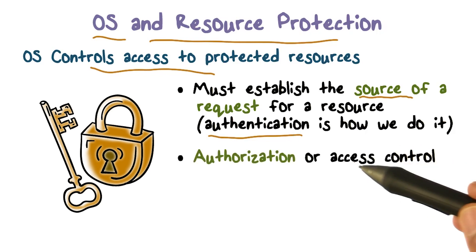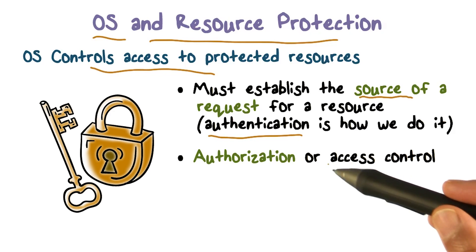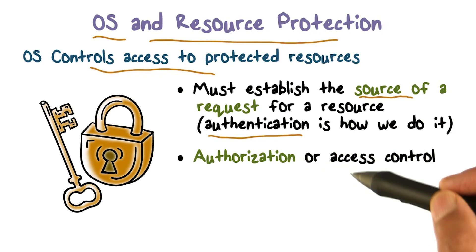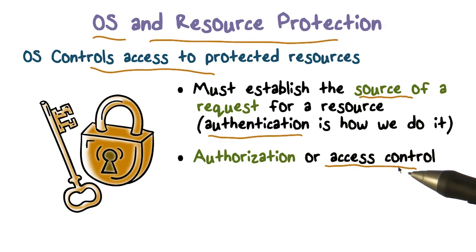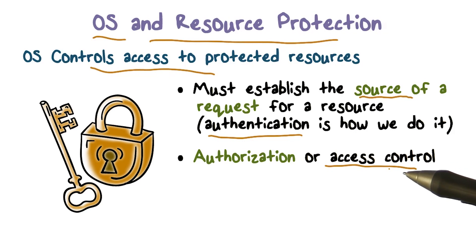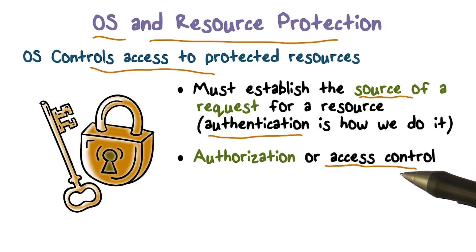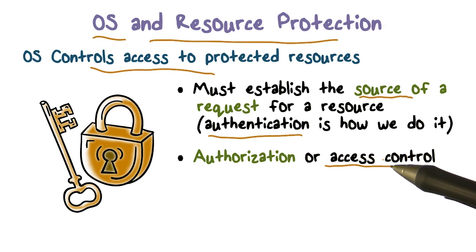Once we know who's making the request, then we have this thing called authorization or access control. This is really checking — looking up — if the source of the request is allowed to access the resource for which the request is being made. You may be allowed to access a certain file, or you may not be able to access a file because it doesn't belong to you. So the check that we're going to do is called the access control check.